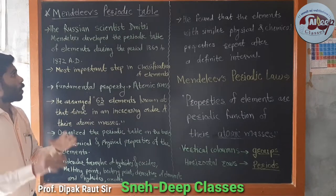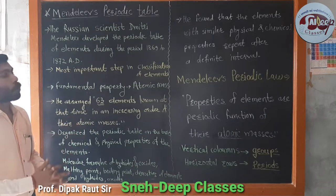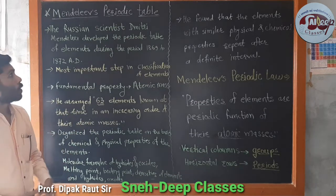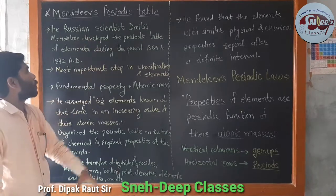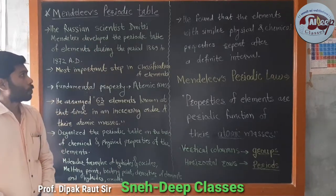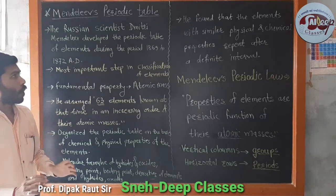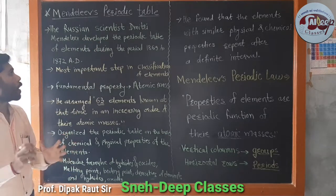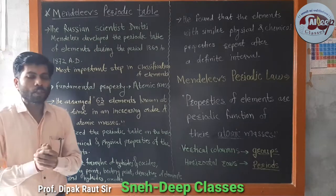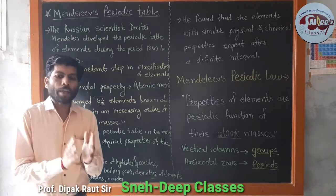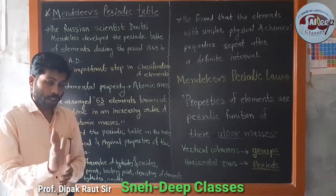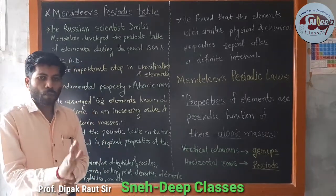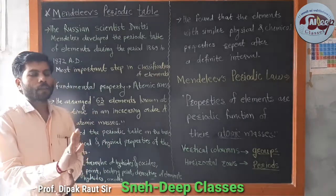The introduction of Mendeleev's periodic table: the Russian scientist Dmitri Mendeleev developed the periodic table of elements during the period 1869 to 1872.